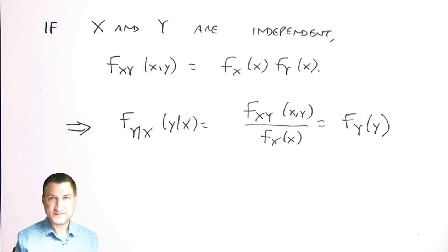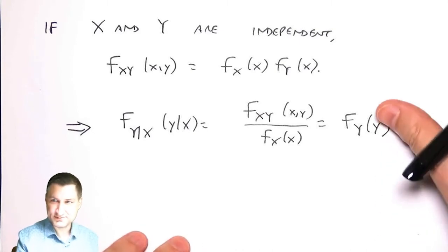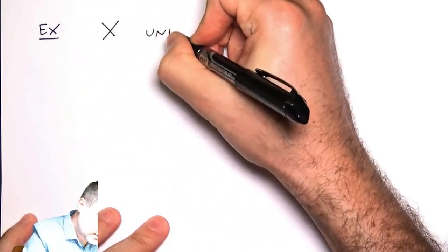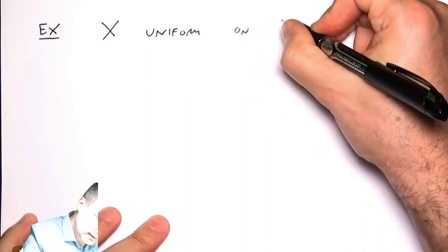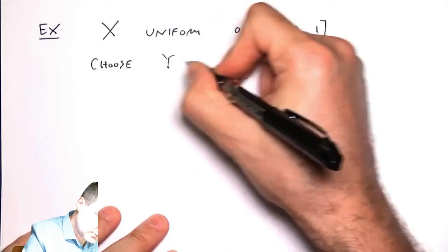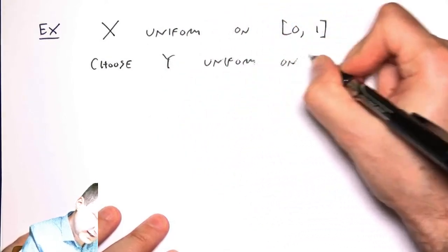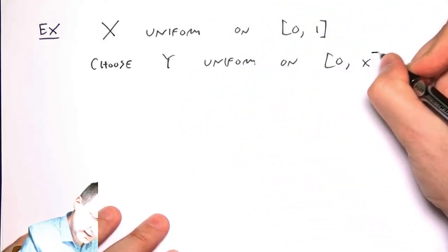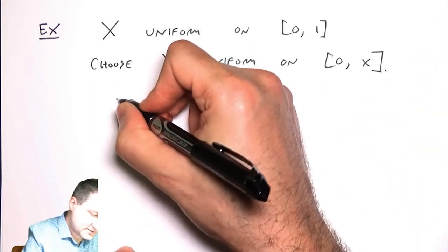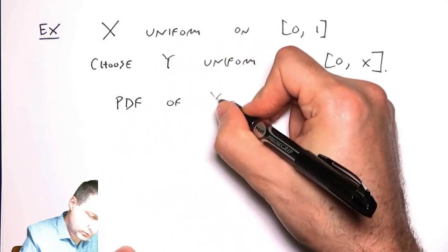This is really useful for figuring out probabilities involving Y when what we're really given as source information are conditionals that involve X. So let me do an example. Let's suppose that I choose X uniform on the interval zero to one, and then once I see X, I choose Y uniformly on zero to whatever X was. The problem is: what is the PDF of Y?